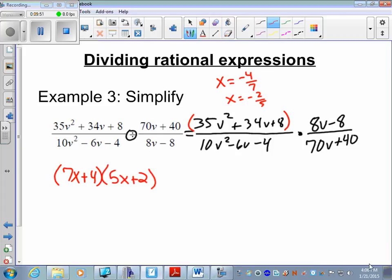First numerator factors are 7x plus 4 and 5x plus 2. Second numerator, 8v minus 8, I see there's a greatest common factor. Factor out 8, what's left is v minus 1. Nothing left to factor in that numerator.